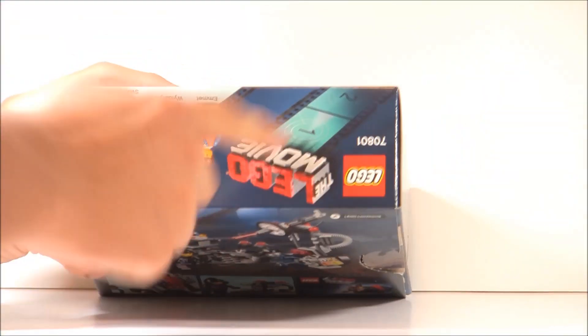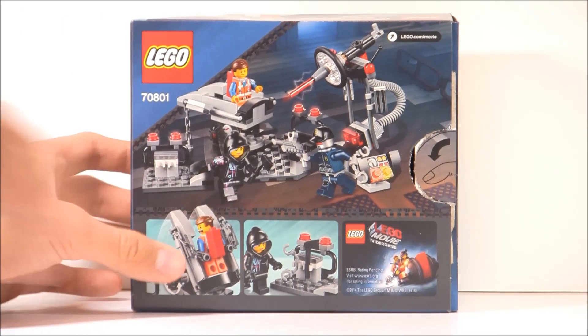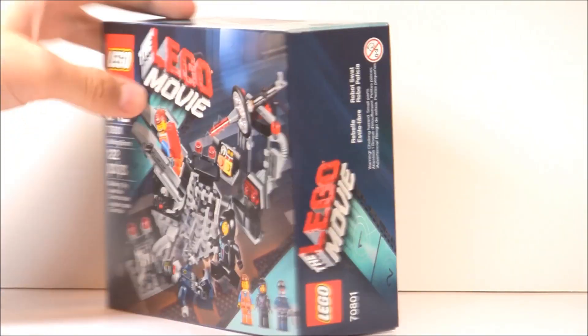You can see the back and the top shows all the little minifigures, and for some reason it shows the cap right there. On the back you can see all the play features and stuff like that. I really do love the box design on this one.